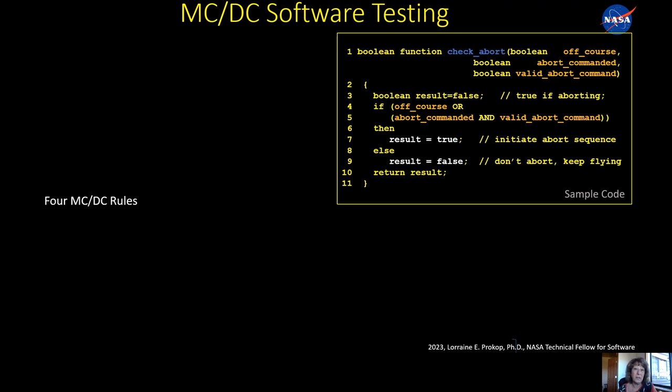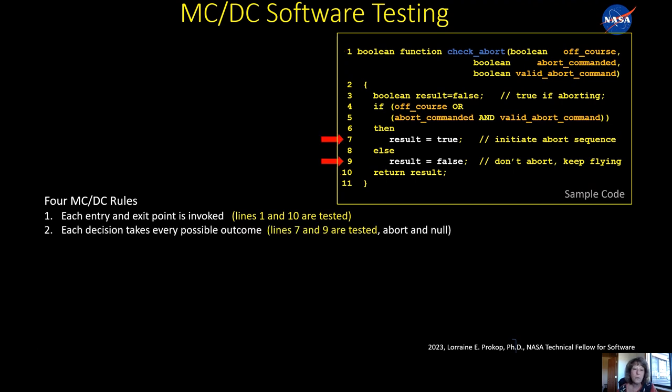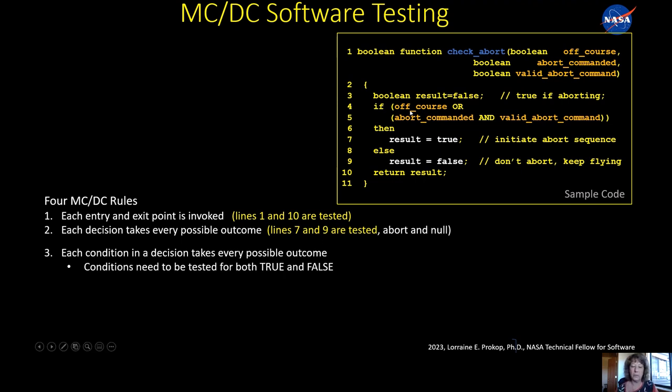Now if you look up MCDC in Wikipedia, you will see it has four rules, and I will go through each of them. So the first rule is each entry and exit point is invoked. So that means lines one and 10 have to be tested. The second rule is that each decision takes every possible outcome. So the outcomes of the decision here are what's after the then and what's after the else. So you have to test abort and not abort or true and false.